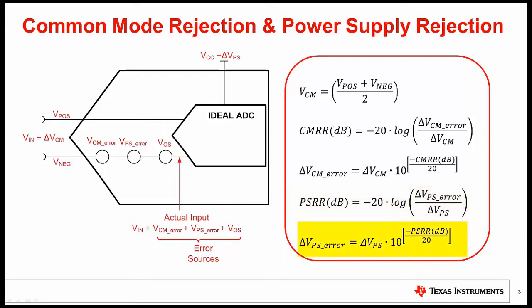Again, this can be rearranged to solve for the change in power supply rejection error based on the change in supply voltage. We will take a closer look at CMRR and PSRR in the next few slides.